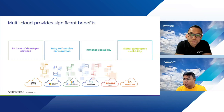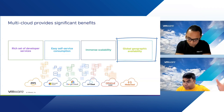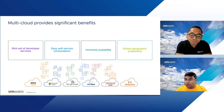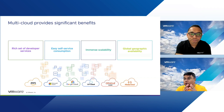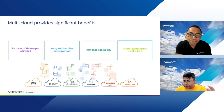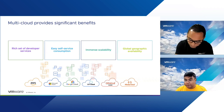The last benefit is global geographic availability. I want to expand my business and reach customers from another continent. Do I build a data center there? No. I can simply use the existing data centers that these hyperscalers already have and take benefit of that. Overall, all these benefits are really available when you go to cloud. And multi-cloud adoption comes because some cloud providers offer certain capabilities better than others, leading to the multi-cloud benefits we see today.